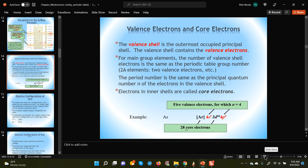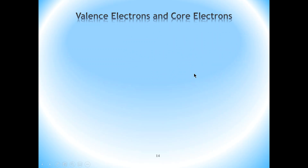In this section, we're going to talk about the electronic configuration of ions. All along, we were discussing the electronic configuration of atoms, but now we're going to look at the electronic configuration of ions. As we all know, specifically monatomic ions are formed as a result of atoms losing or gaining electrons.